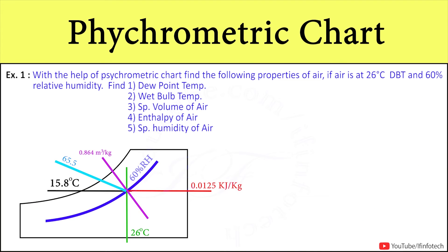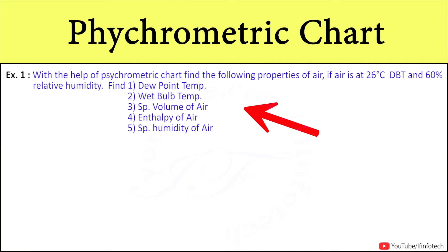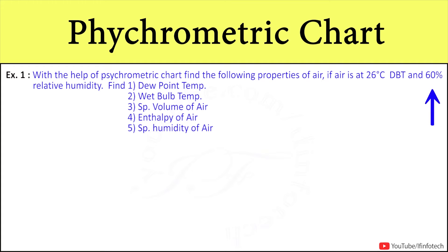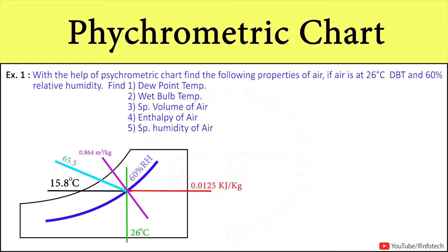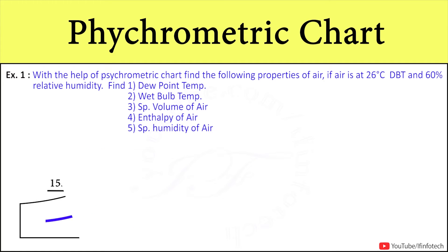Now we will solve some numericals related to psychrometry chart. The statement is: with the help of the psychrometry chart, find properties of air if air is at 26°C dry bulb temperature and 60% relative humidity. Find dew point temperature, wet bulb temperature, specific volume of air, enthalpy of air, and specific humidity of air. We also have to plot the process on the psychrometry chart.